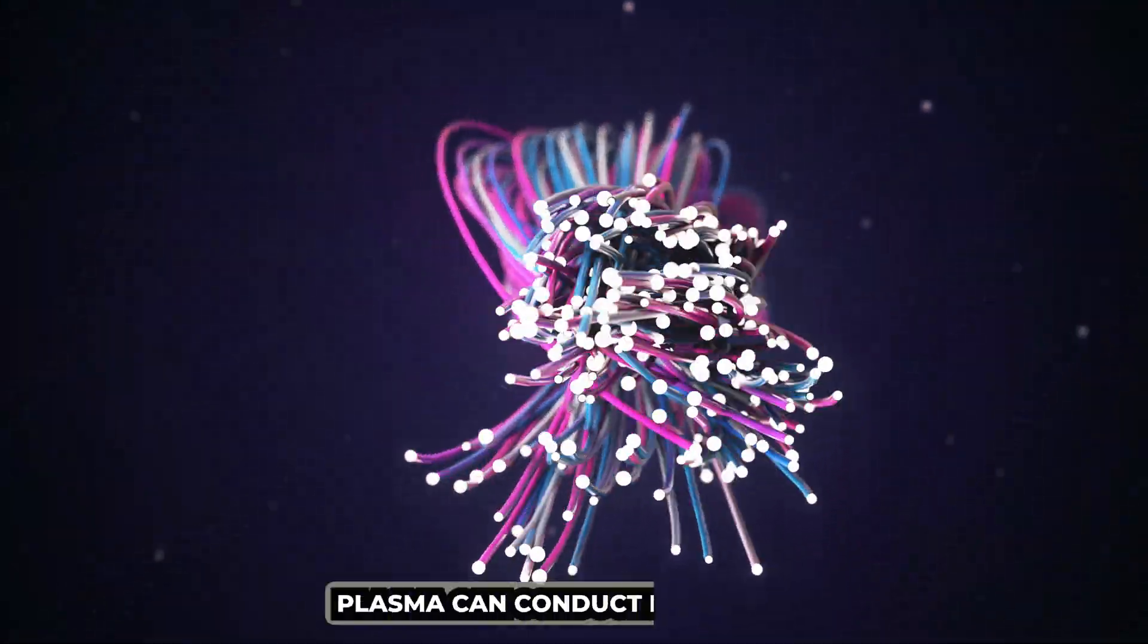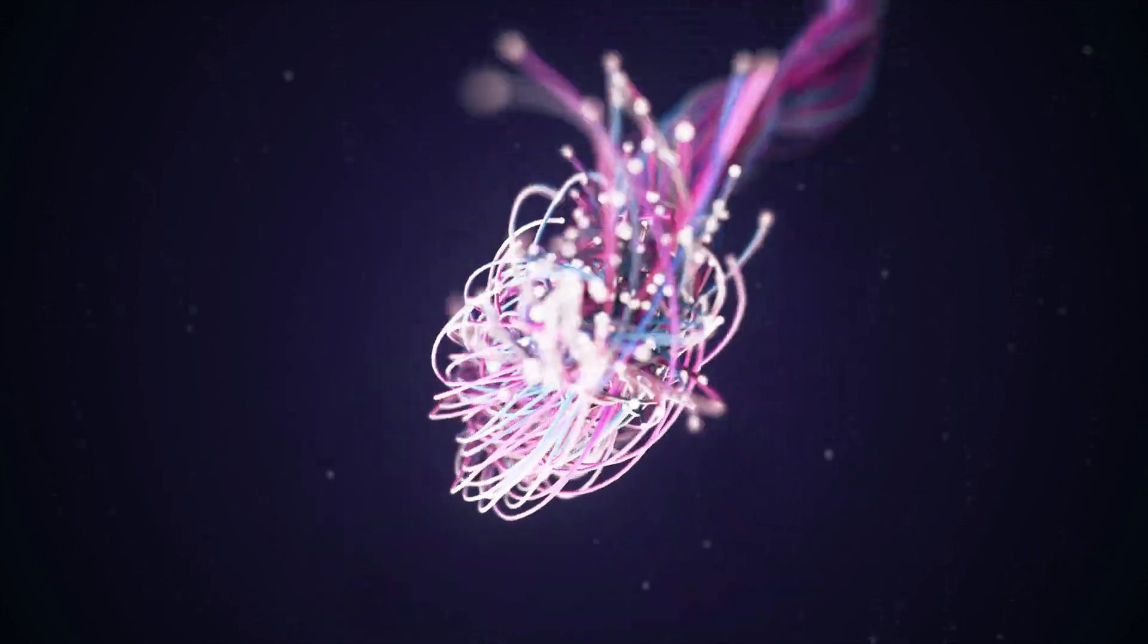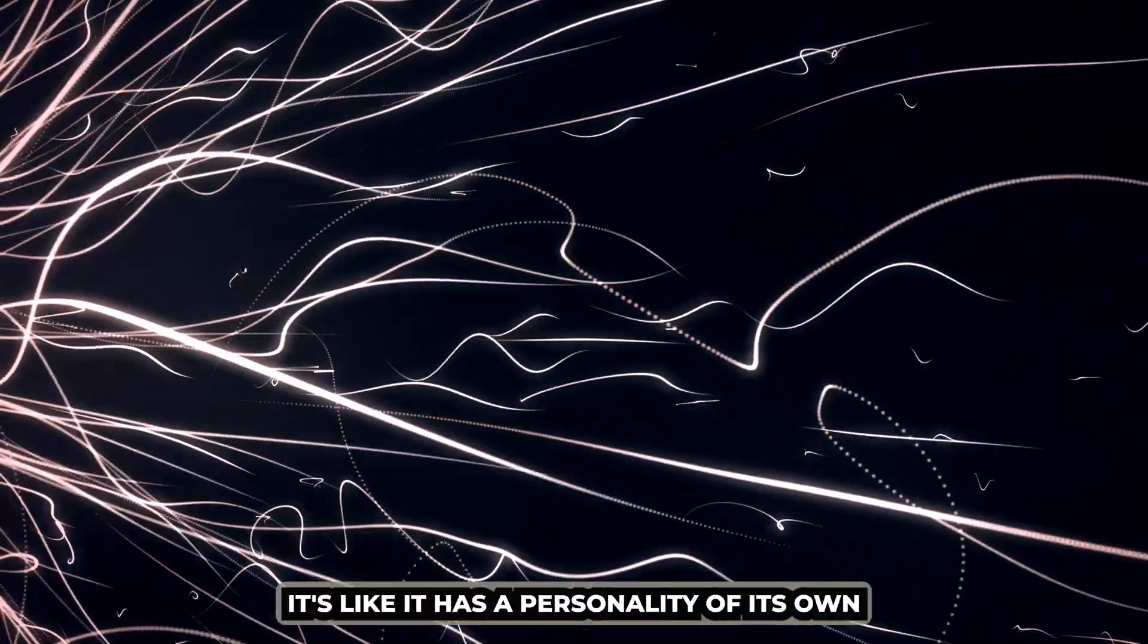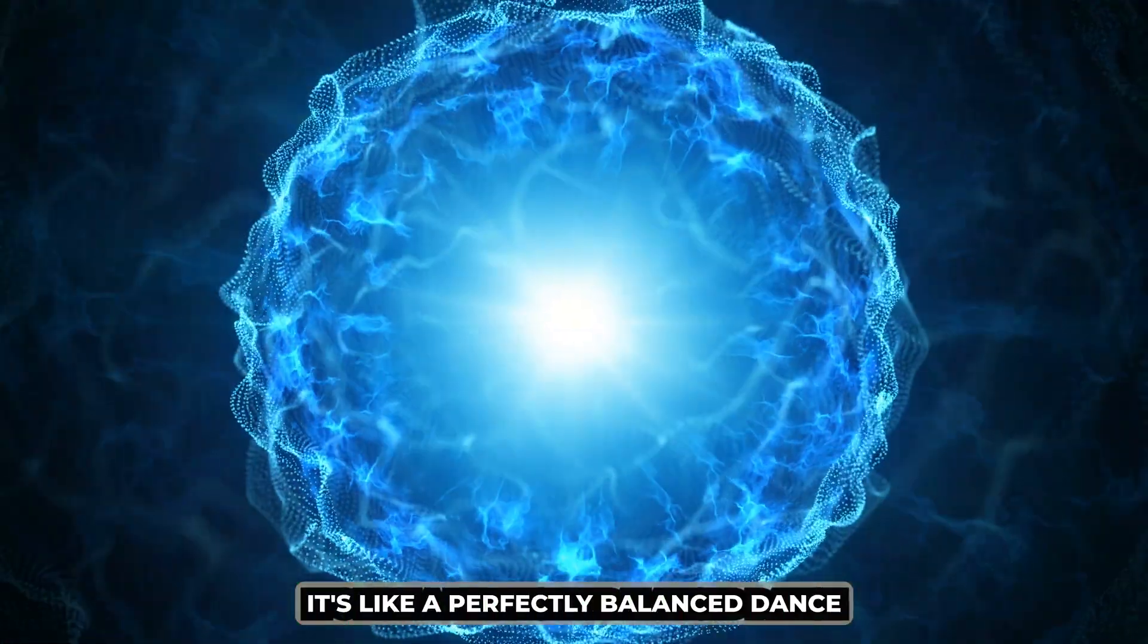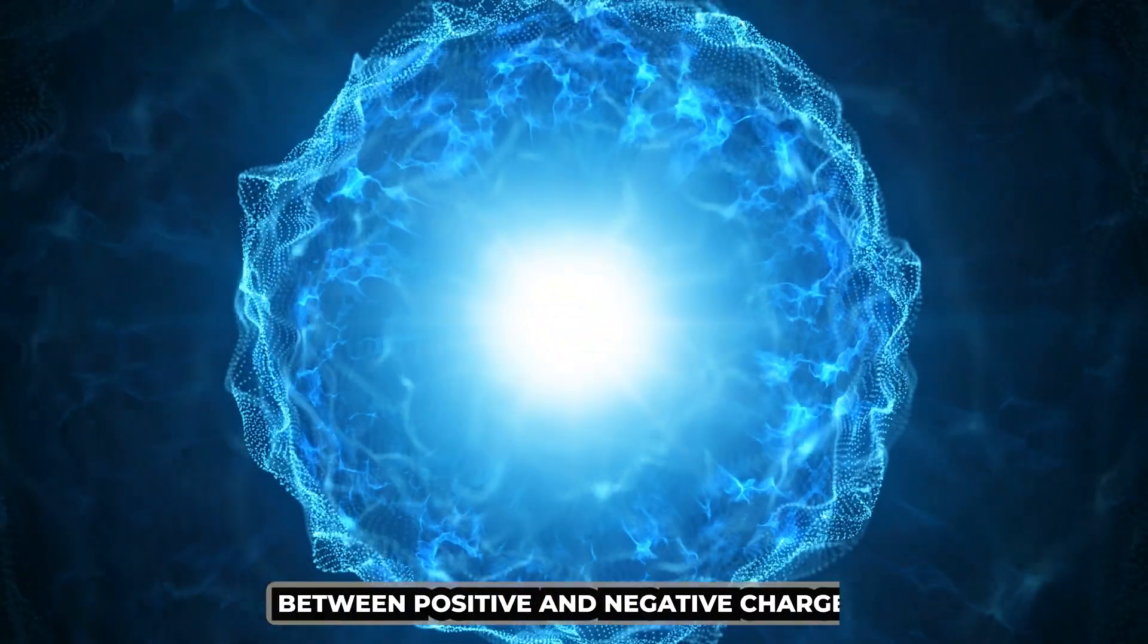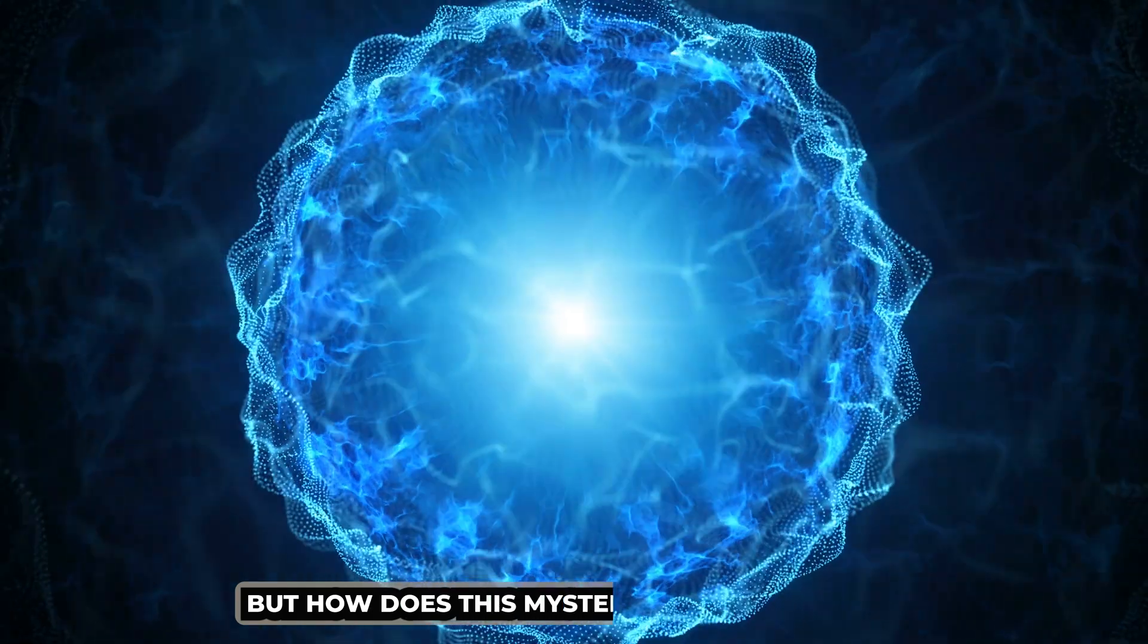Plasma can conduct electricity like a metal, but it can also be influenced by magnetic fields. It's like it has a personality of its own, responding to its environment in fascinating ways. And even though it has all these charged particles, plasma is generally neutral. It's like a perfectly balanced dance between positive and negative charges.